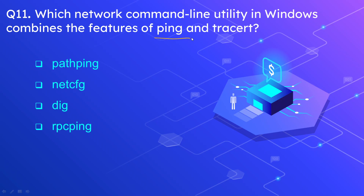Question 11: Which network command line utility in Windows combines the features of ping and tracert? The options are pathping, netconfig, dig, and rpcping. The correct answer is pathping. Pathping combines the functionality of both ping and tracert — ping only gives you the status of a remote host (whether it is alive or not), while tracert gives you hop-to-hop information, tracing all the hops between you and the destination. Pathping does both: it checks the availability of the remote host and gives you all the hops in between.